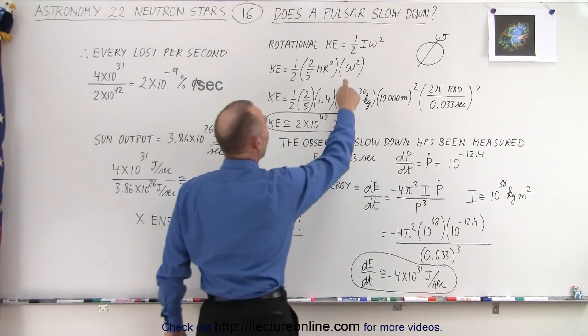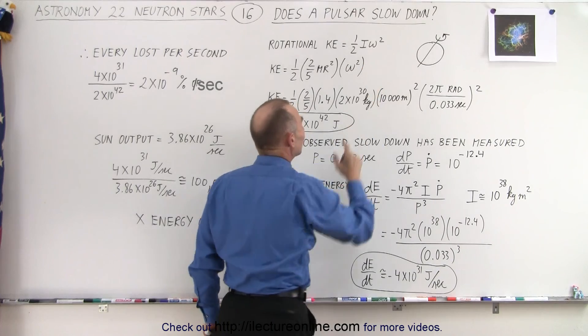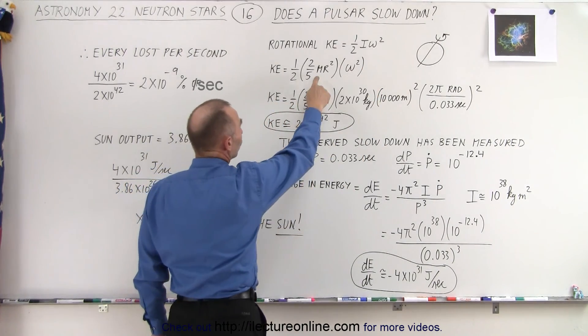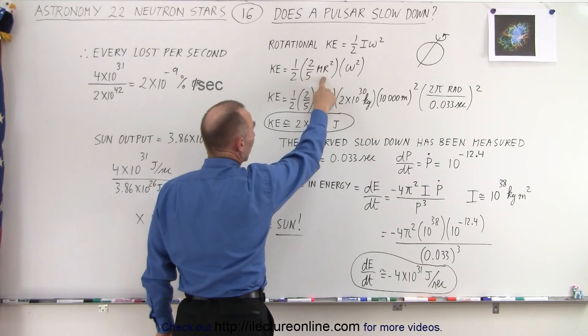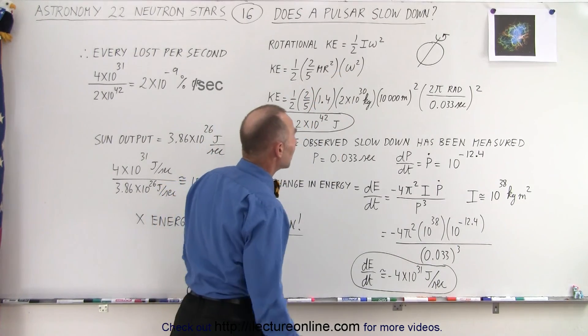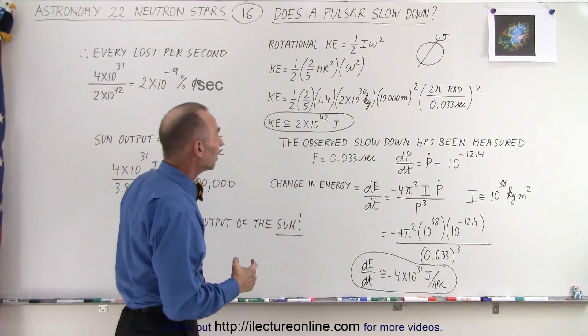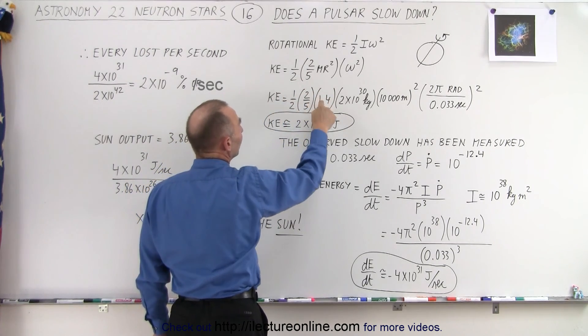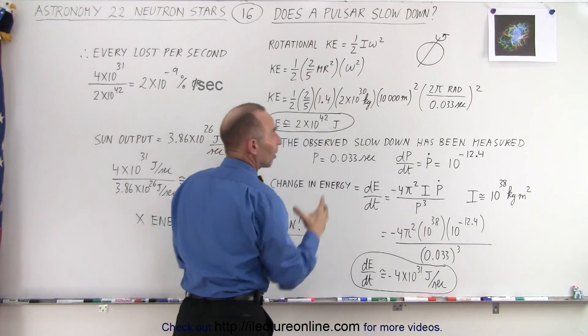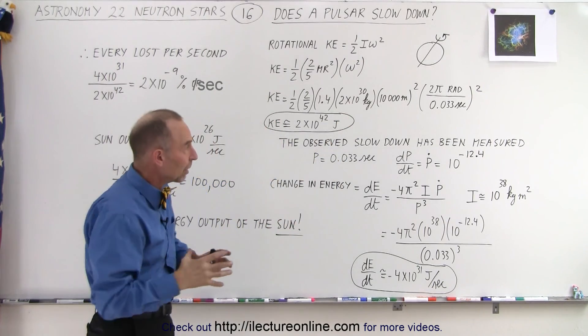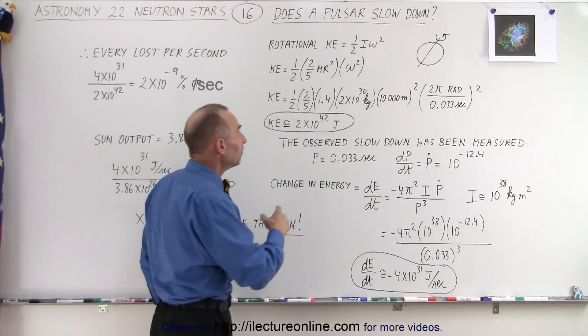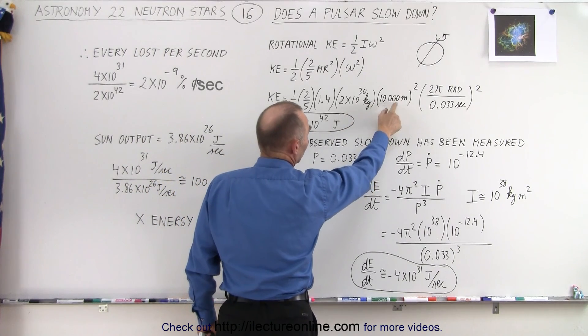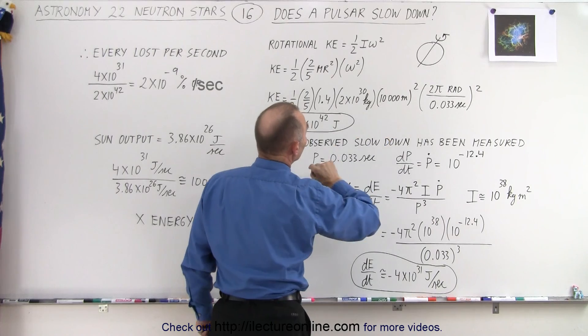It's equal to one-half the moment of inertia times the angular velocity squared. The moment of inertia for a solid ball is two-fifths MR squared, and then we multiply times the rotational speed squared. We take one-half times two-fifths times 1.4 times the mass of the Sun. The pulsar inside the Crab Nebula is about 1.4 times the mass of the Sun. And we multiply times the radius of the pulsar squared.